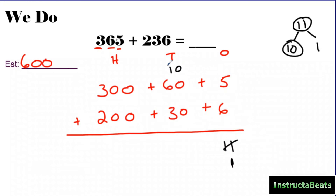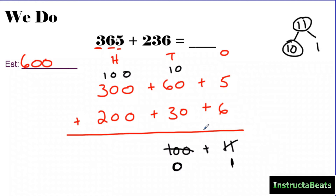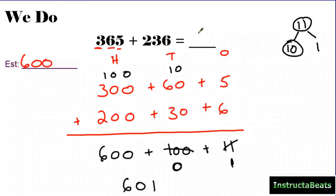Now I add my 10s place: 10 plus 60 is 70, plus 30 would be 100. So that is 100, but there's a problem — 100 is 10 10s and I can't have more than 10 of a place value. So I need to package this 100 and send it to the 100s place. When I regroup that 100, I'm left with 0 — and it's okay to be left with 0. Now adding the 100s: 400 plus 200 would be 600. In expanded form my answer is 600 plus 0 plus 1, which in standard form is 601. That's reasonable because my estimate was 600.